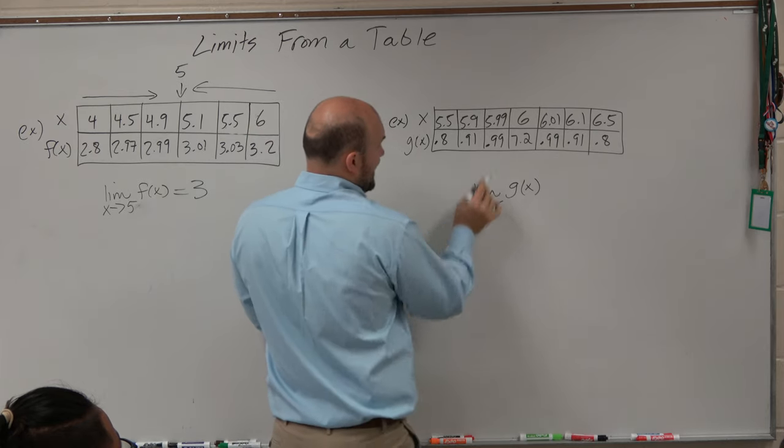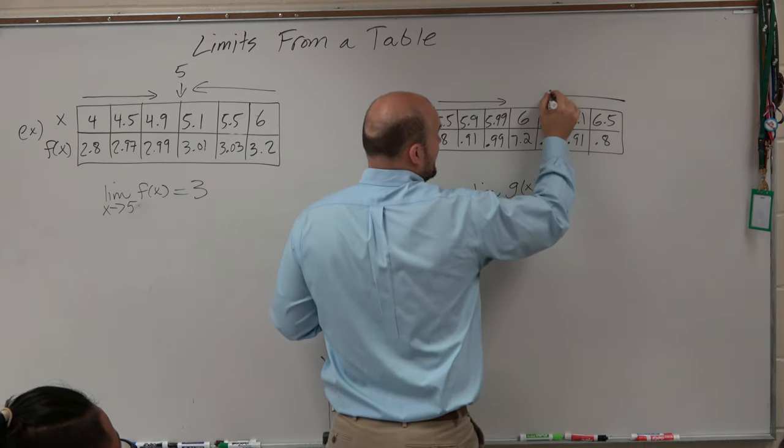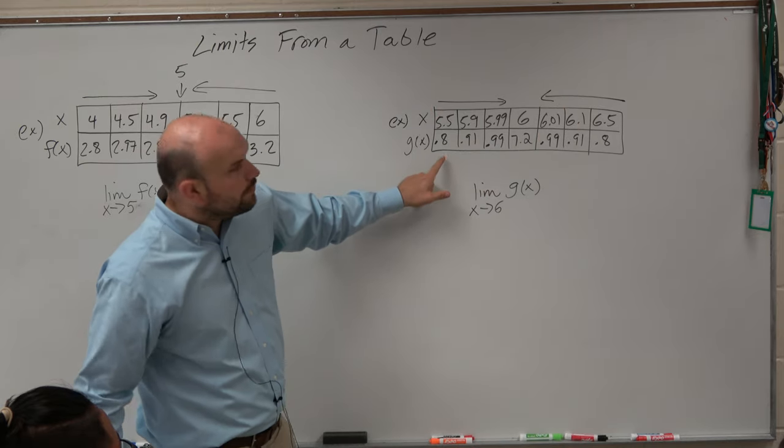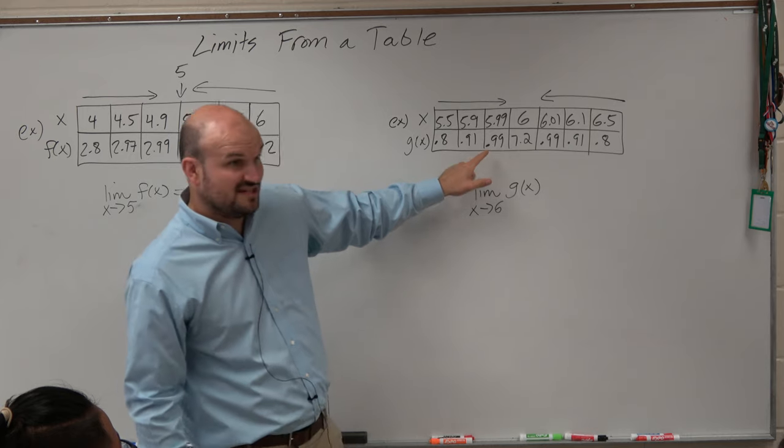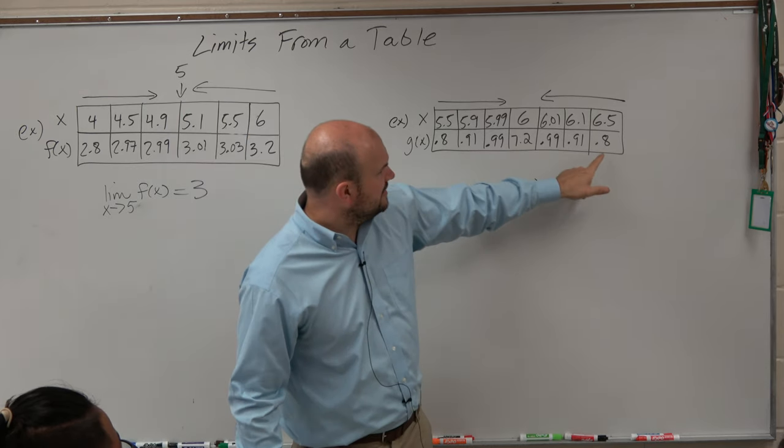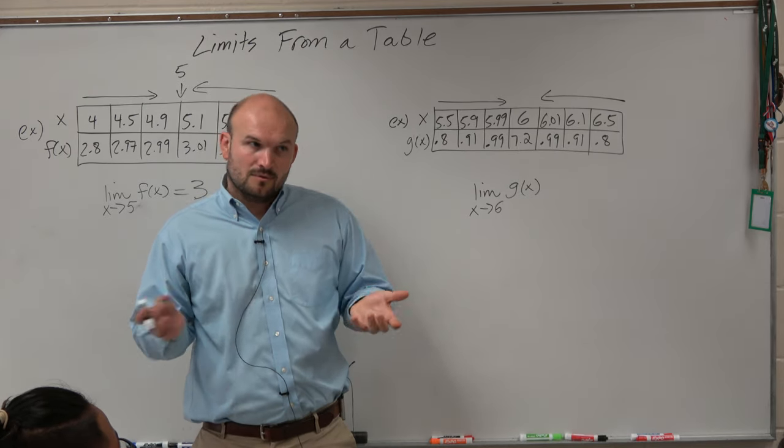As x gets closer and closer to 6 from the left and from the right, what y value? 0.8, 0.99, 0.99... It's getting really close, not to 7.2 though. From the right, it's getting really close to a number. What number does it look like it's approaching? 1.